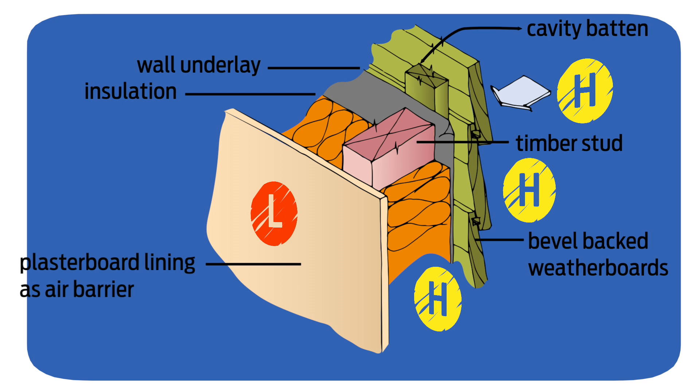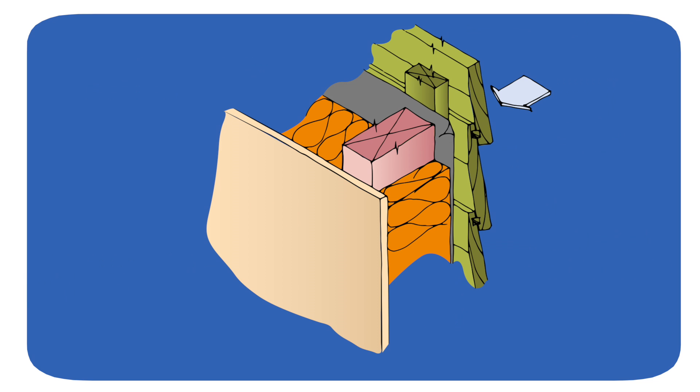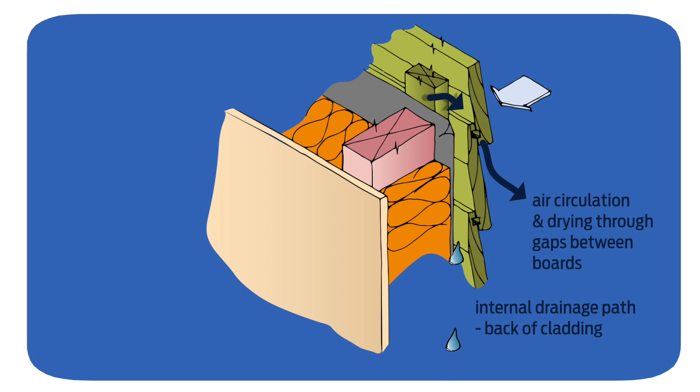Water that does make it behind the cladding can be deflected from going further in the wall and then removed with a combination of engineered drainage and drying. We take advantage of gravity to divert water down and out of the building.